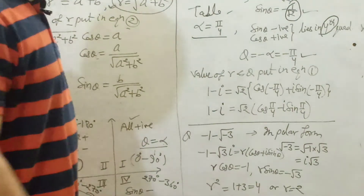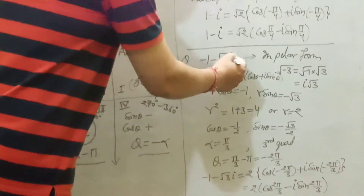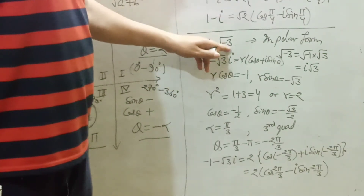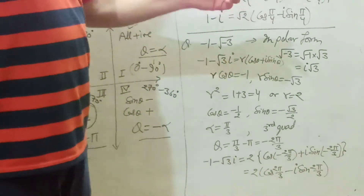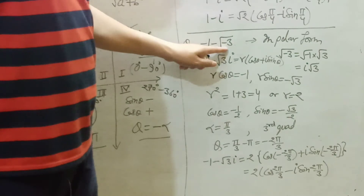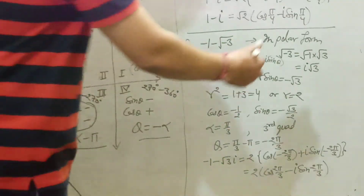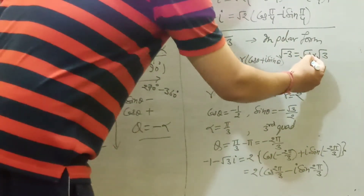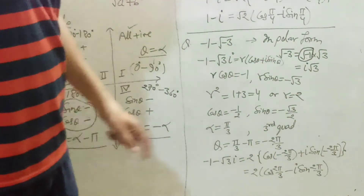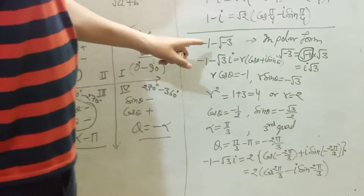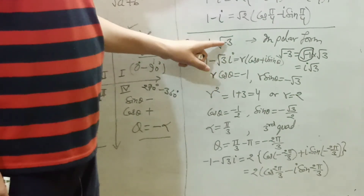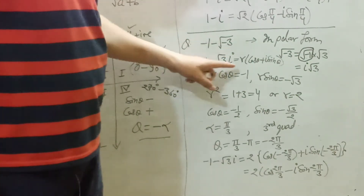Let's take another example: convert minus 1 minus root(−3) into polar form. Here i is not explicitly given, but there is a negative under the root. Under root of minus 3 equals under root of (minus 1 times 3) equals i times root 3, since root(−1) equals i. So the expression becomes minus 1 minus root 3 times i, which is now a standard complex number.